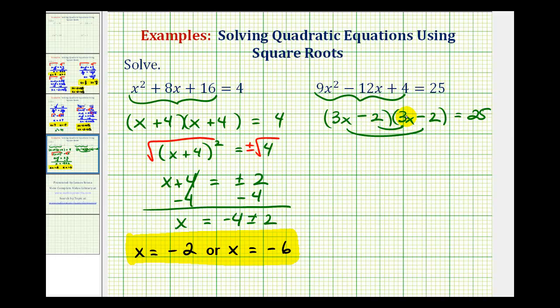Notice how we have negative 6x and negative 6x, which would have a sum of negative 12x. So we factor this correctly, and notice how we have two equal terms. So we can write this as the quantity 3x minus 2 squared equals 25.